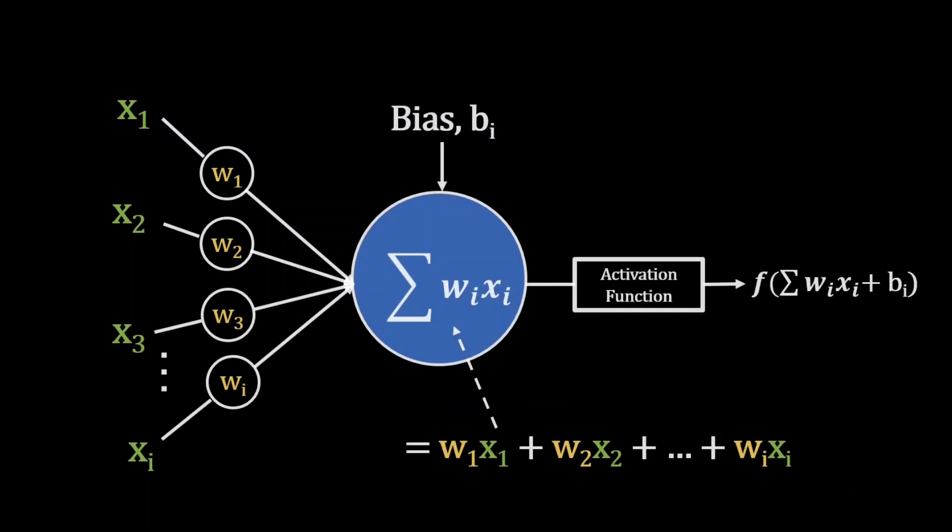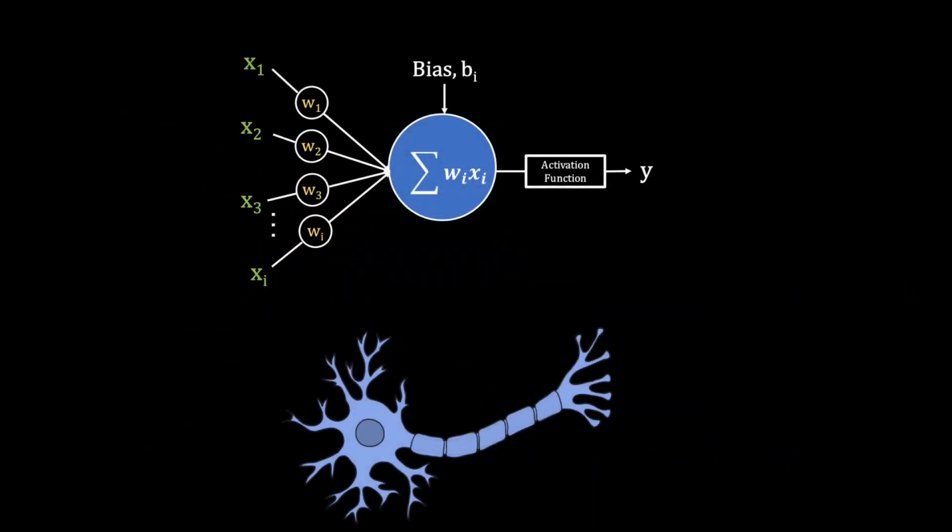So that's the basic structure of a node. If we place the node beside its biological neuron counterpart, we can clearly see the relation between the dendrites and the inputs and weights, the soma with the weighted summation, and the axon with the activation function and output.